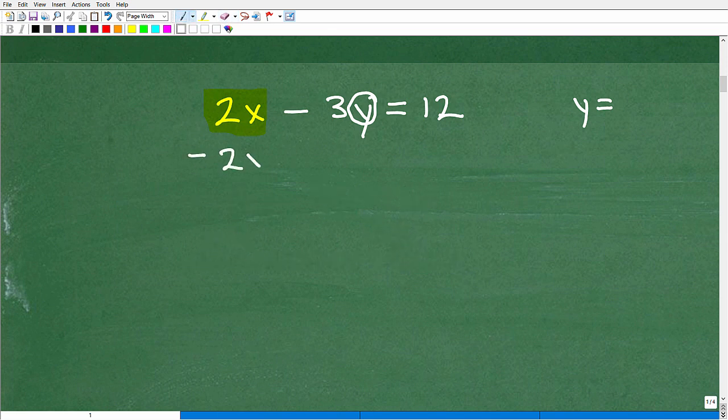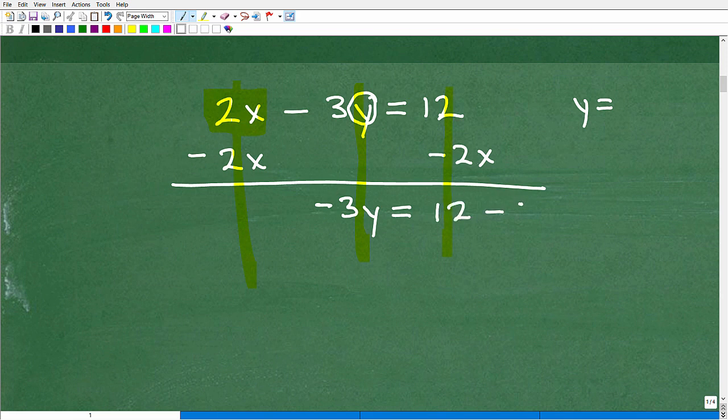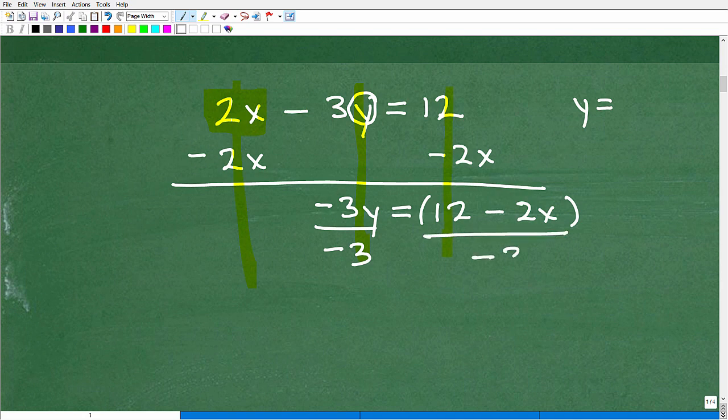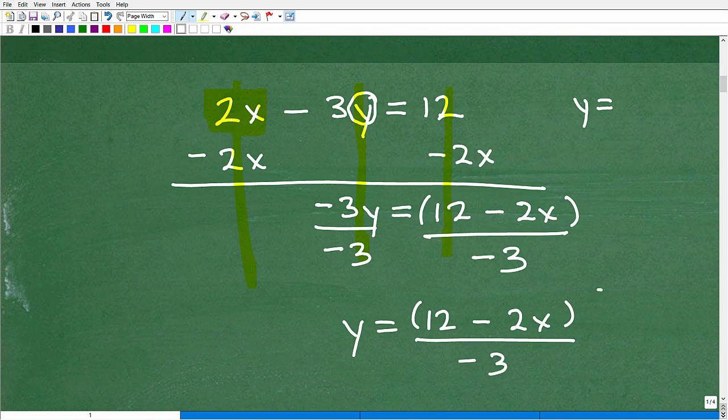So I'm going to subtract a 2x from both sides of the equation, and now when I add down, I have positive 2x minus 2x. That's, of course, 0, and I have this negative 3y equals, now here I have 12 plus a negative 2x. We can just write this like so: 12 minus 2x, and now this is a difference. It's always a good idea to put grouping symbols in there, like so. And to solve for y now, all I have to do is divide both sides of the equation by negative 3, and you have y is equal to 12 minus 2x over negative 3, and we are done.